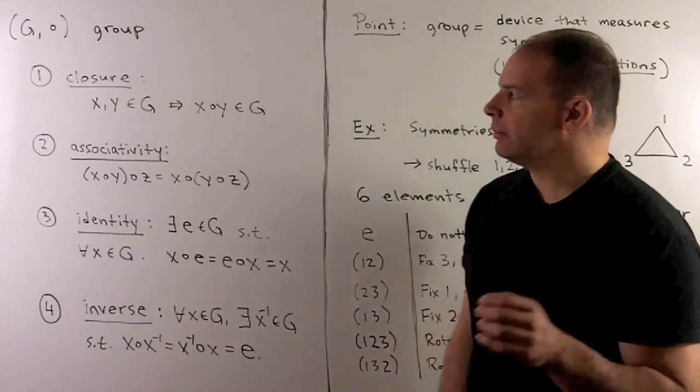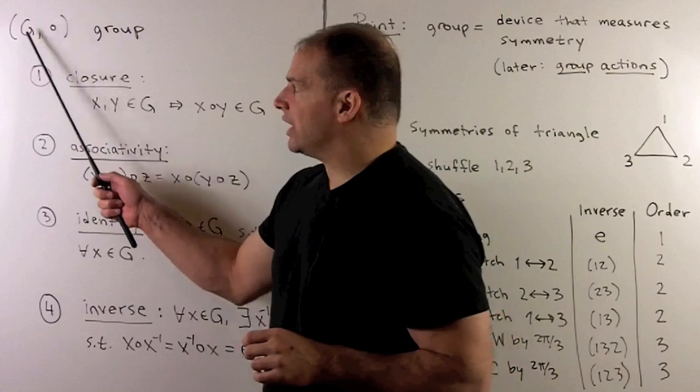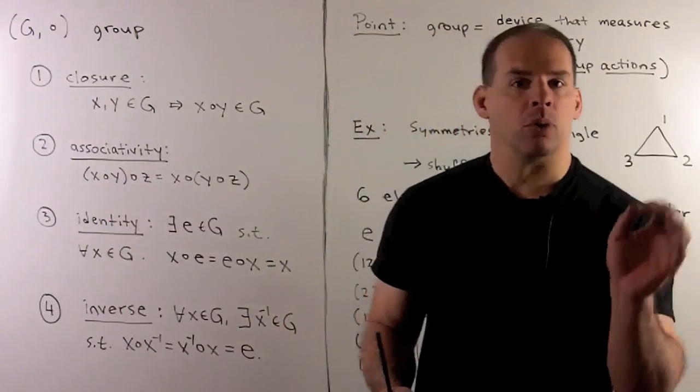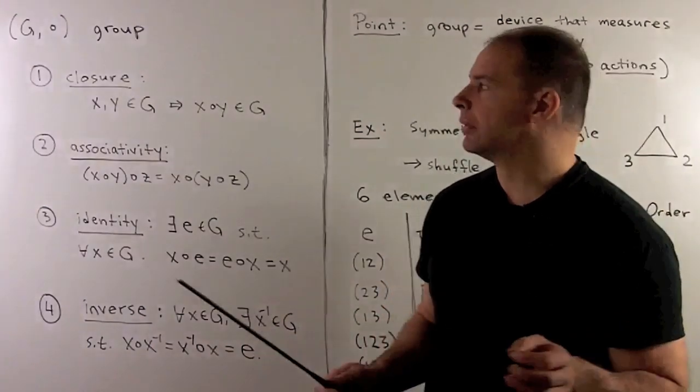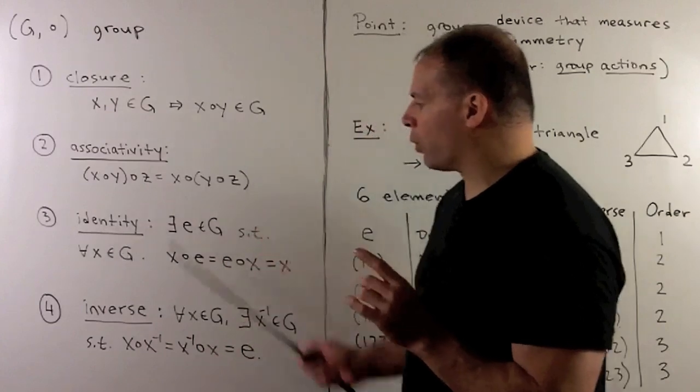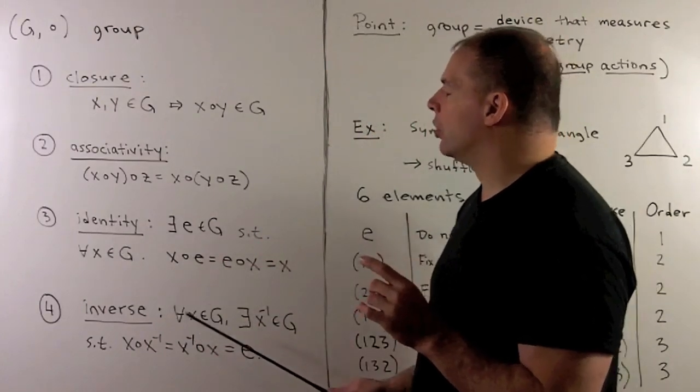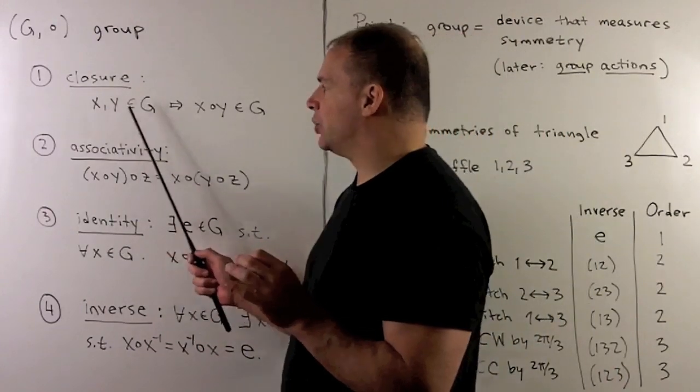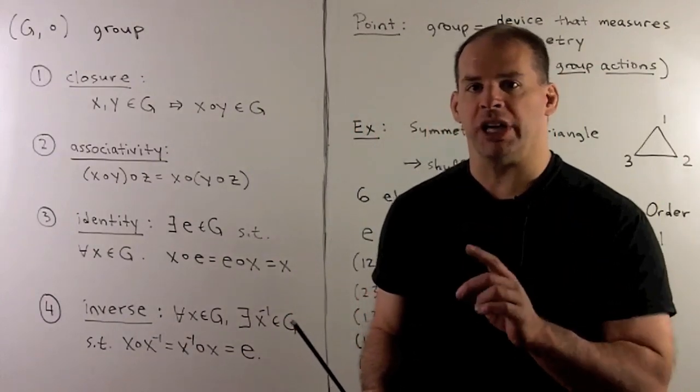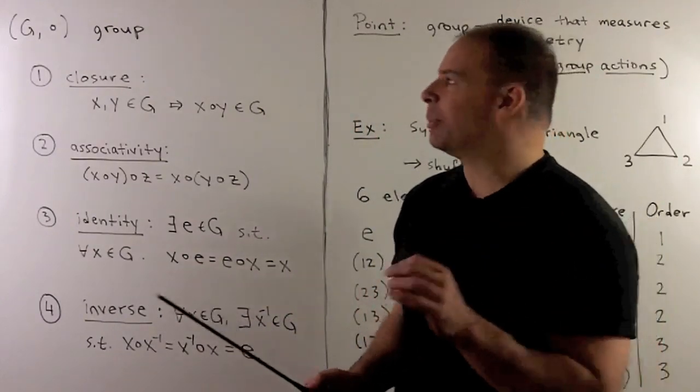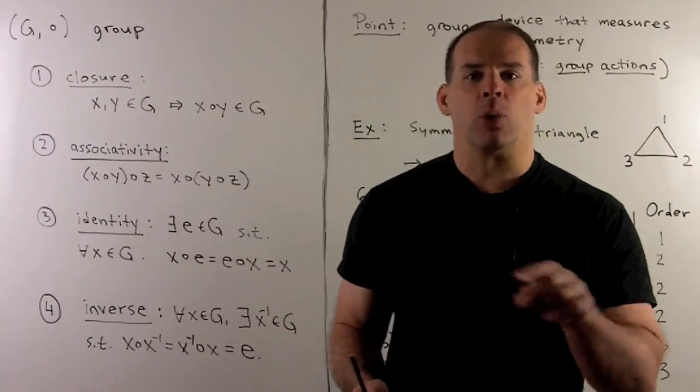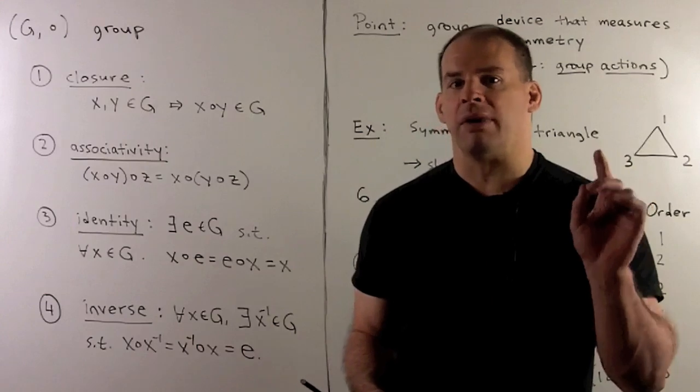By definition, if I have a set G with a binary operation on G back into itself, we'll call that a multiplication. G is called a group if it satisfies the following four properties. First, we take any two elements in G, we multiply, we get another element in G. This is implied by having a binary operation on G, but if we were working in a larger set, we would need to verify this.